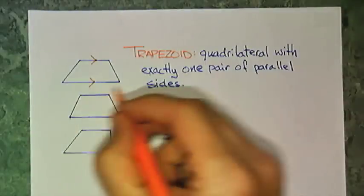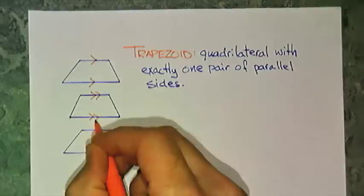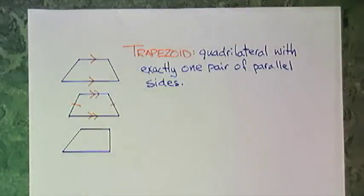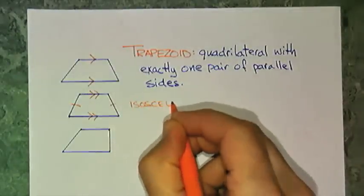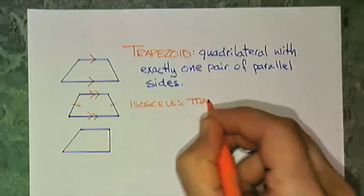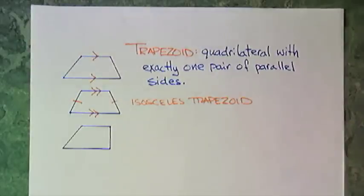If I mark this one parallel also and I use a different mark to show that those two sides are congruent, now I have an isosceles trapezoid. So that's a trapezoid with two congruent sides.